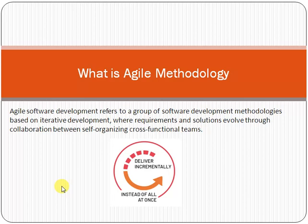First we need to understand what a project is. A project is a temporary activity that has a beginning and an ending point, and it gives you a unique output or product. For example, if you are implementing an e-commerce solution for a customer, that is a project — it has a four-month duration. Within four months the project must be completed; after that, resources are released and activities end. A project is time-bound and delivers a unique output.